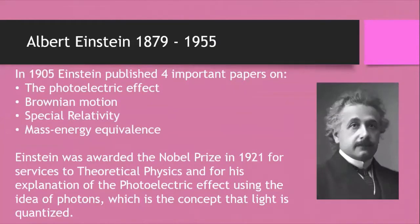So let's get into it. Albert Einstein published four papers in 1905: on the photoelectric effect, on Brownian motion, on special relativity, on the equivalence between mass and energy — E equals MC squared — and other things as well. He was awarded the Nobel Prize in 1921, mainly for his explanation of the photoelectric effect using the idea of photons, which is the concept that light is quantized — that light comes in packets, packets of energy.